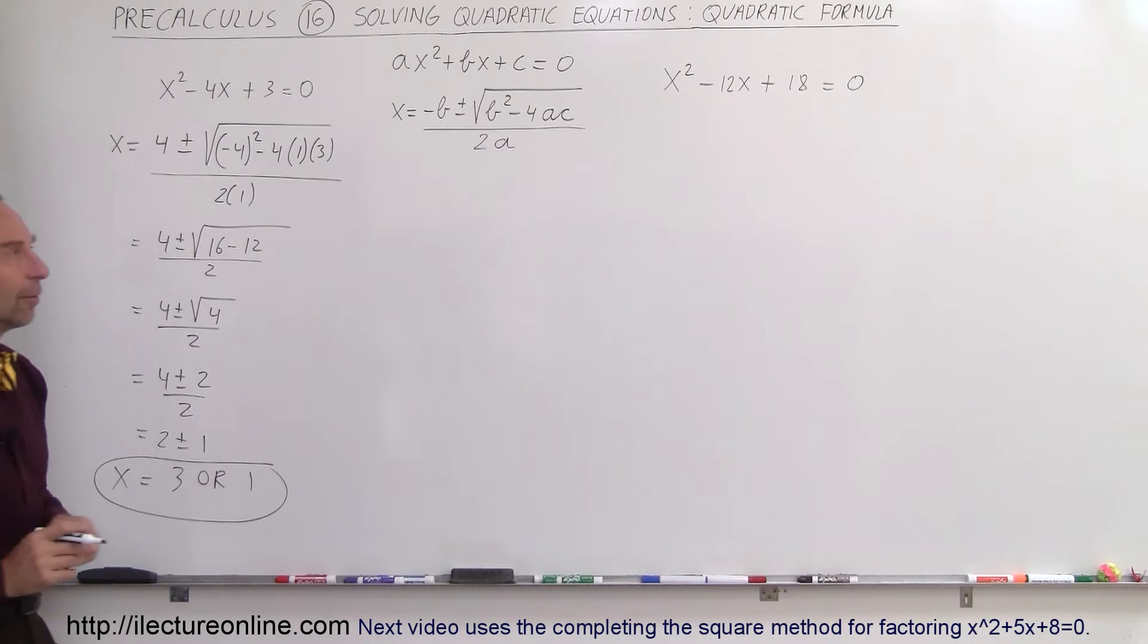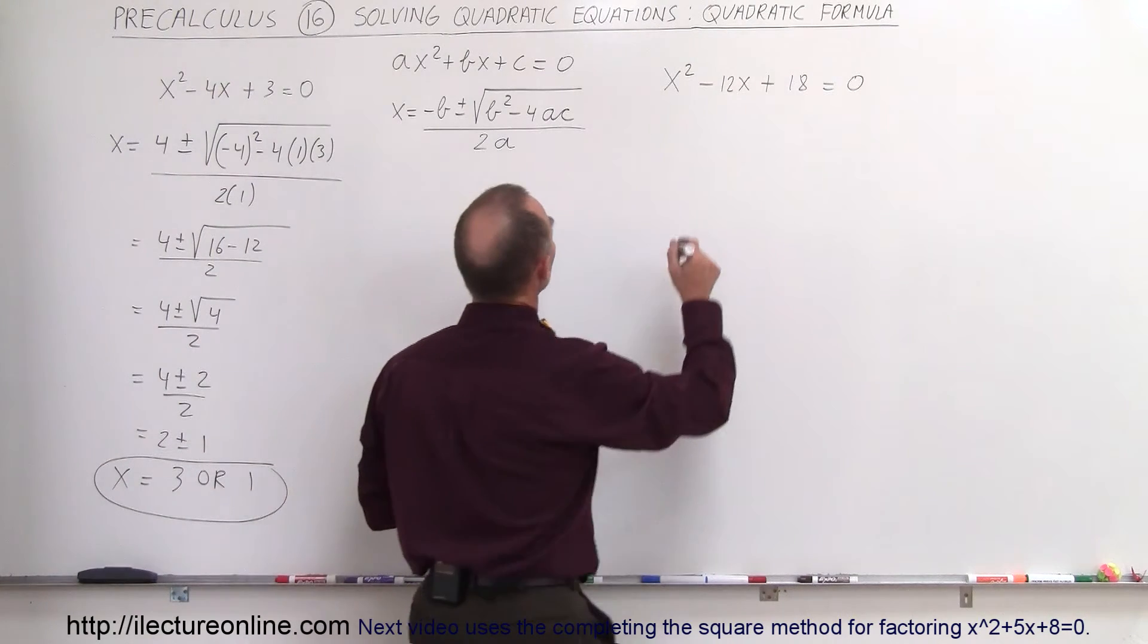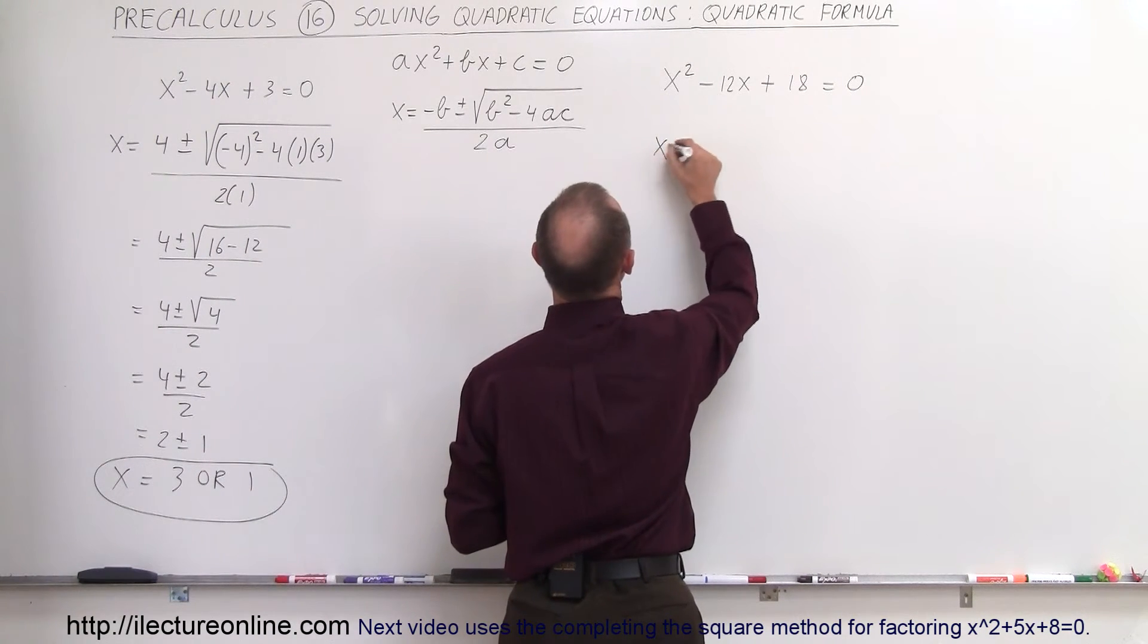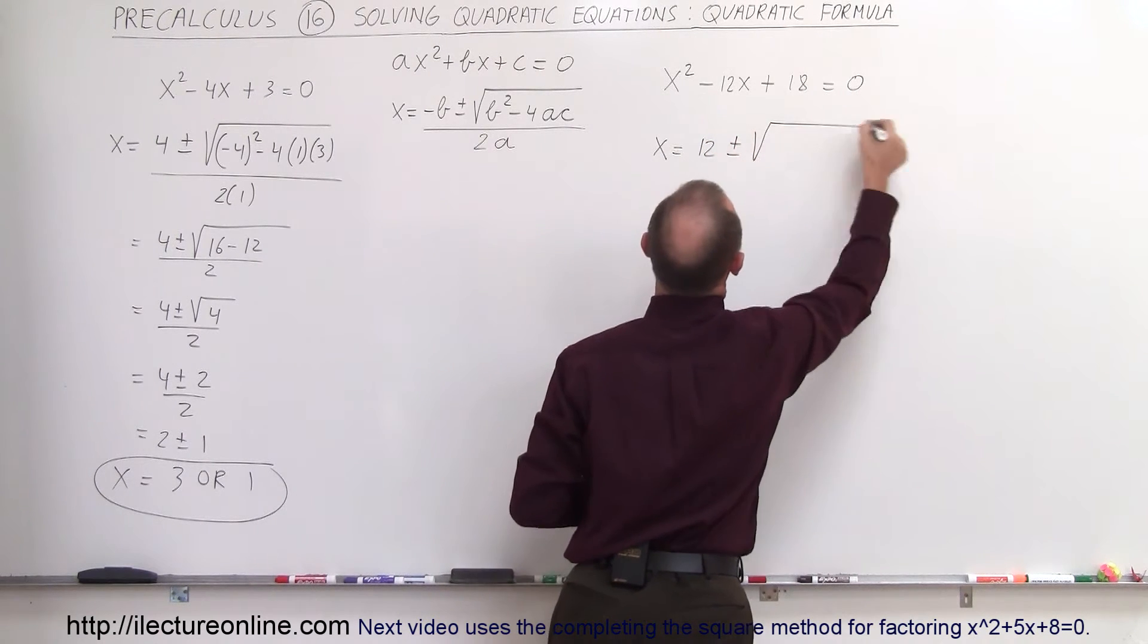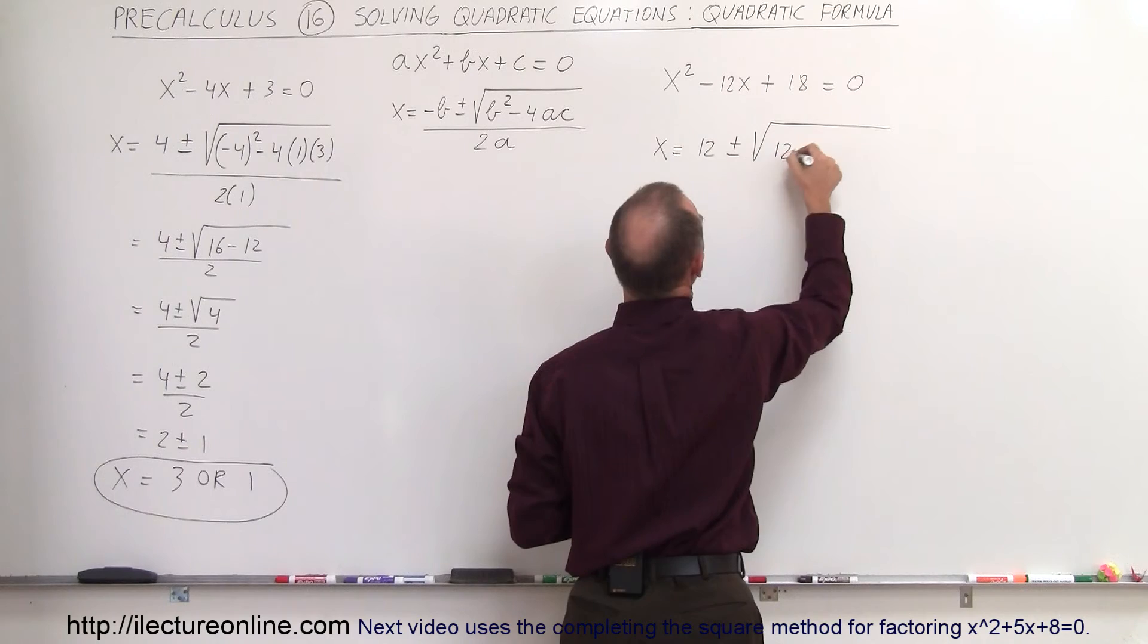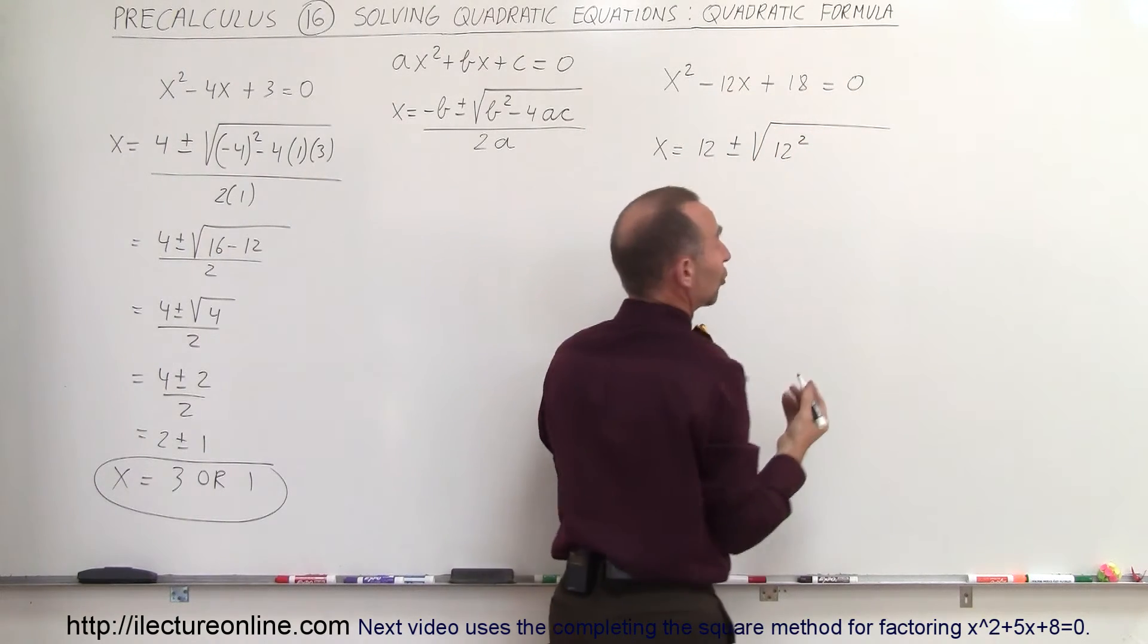Let's try it for that example right there. So here we can say that x is equal to minus b, which is 12, plus or minus the square root of b squared, which is 12 squared. It doesn't matter if it's negative since we're squaring it anyway.